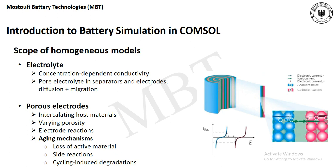The most common model used in battery simulation in CompSoul is the homogeneous model. The scope of the homogeneous model is composed of two different components. The first one is the electrolyte — that's the concentration-dependent conductivity, or the pore electrolyte in separators and electrodes — and diffusion or migration are key topics to study for the electrolyte.